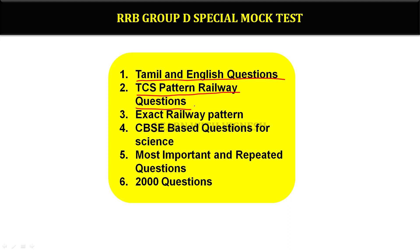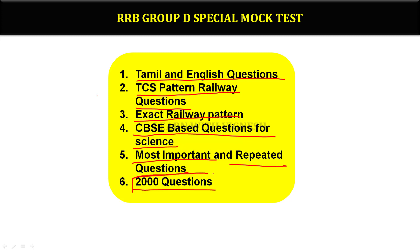The test covers Group D and MTS selected questions — exactly railway pattern, science especially. Questions are completely CVSE-based, including previous year questions and important select questions that are likely to repeat. There are 2000 questions in total.